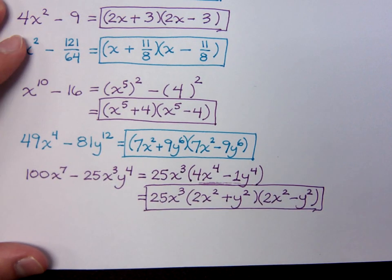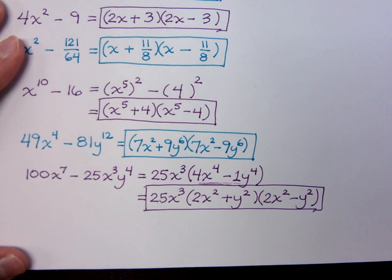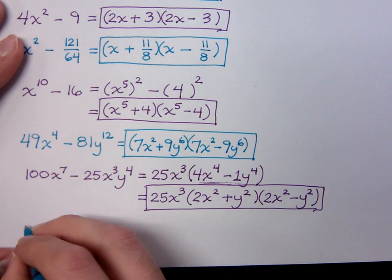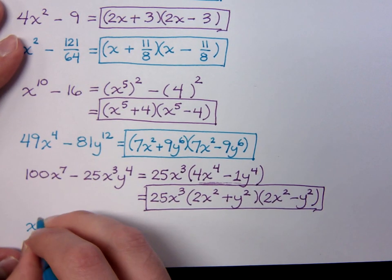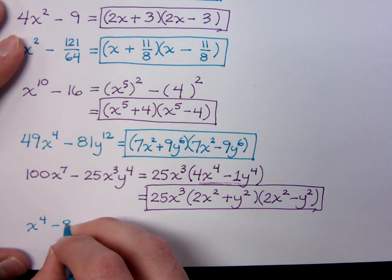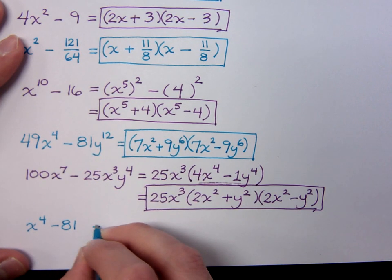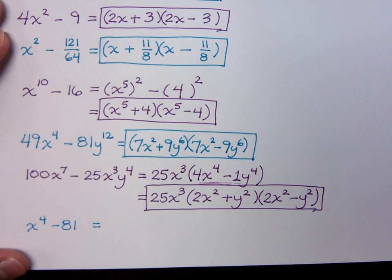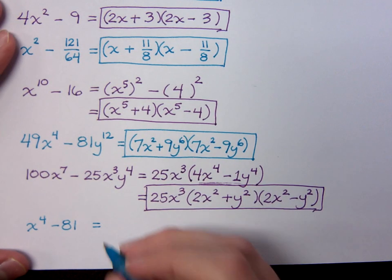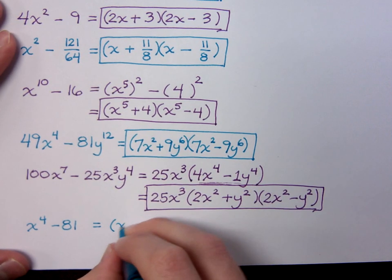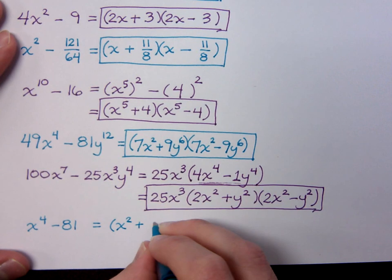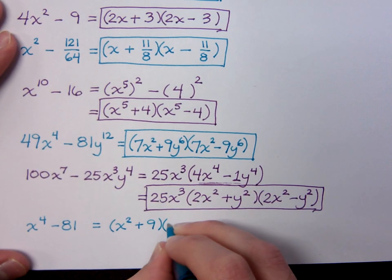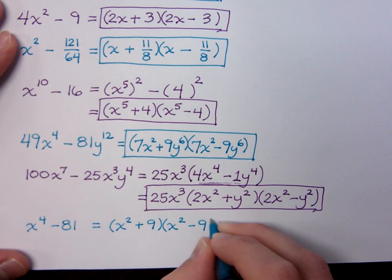And let's do one last problem. For this one, I want to look at having x^4 - 81. We've seen a lot of examples here with the exponents and with the squares. And so I hope you guys see that this guy would break down as x² + 9 and x² - 9.